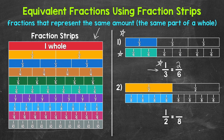Moving on to number two, we have one-half is equivalent to how many eighths. The top fraction strip has the whole rectangle divided into two equal parts. Each part is one-half of the whole, and one part is shaded in, so our fraction is one-half. For the fraction strip below, it has been divided into eight equal parts, so each part is one-eighth of the whole. Four parts are shaded in, so our fraction is four-eighths. One-half and four-eighths are equivalent fractions, and we can see that with those fraction strips.